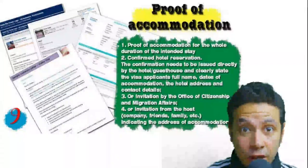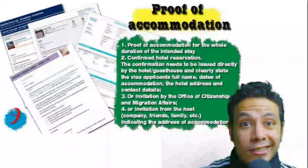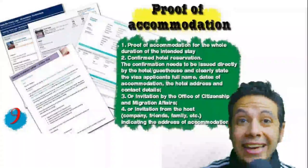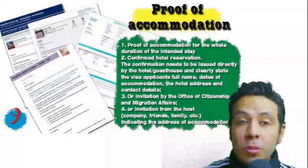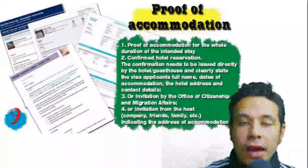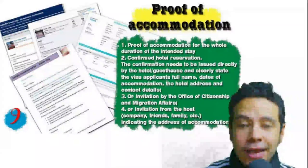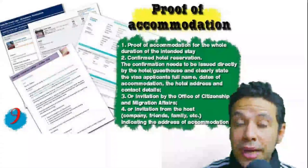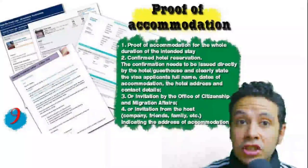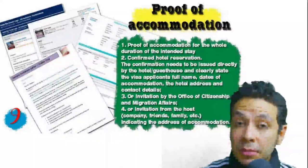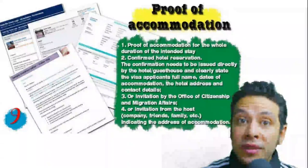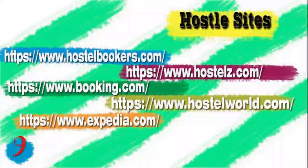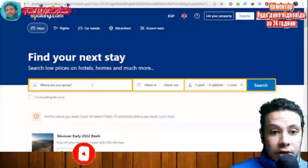You will also need to provide proof of accommodation, which could be a confirmed hotel reservation, an invitation from a host in the country, or an invitation from an organization you are visiting. For a hotel or hostel, an initial booking is generally acceptable, though in some cases a confirmed booking is required. The hotel name, address, and contact number must be mentioned. If invited by a person, a letter of invitation or a copy of their passport should be included.